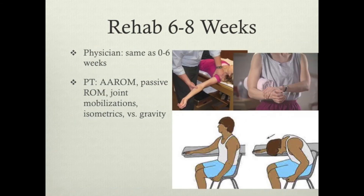Between week six and eight, more things are added to the program. You'll begin what is called active assisted range of motion, where your arm does some of the work with a little help from the therapist or your other arm. The PT will still be doing passive range of motion and joint mobilizations. In a lot of cases we'll start adding isometric exercises — gently pushing against a stationary object — and in some cases, when progress is good, we can even start doing some motions of that shoulder against gravity.